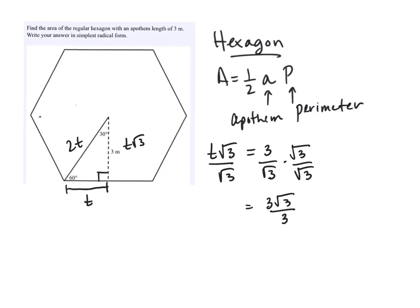So this is 3√3 divided by √3 times √3 is √9, but the square root of 9 is 3. These 3's cancel, and we can see that our t is √3. Now that we have t, we can find the whole side. It's just two of those √3's.